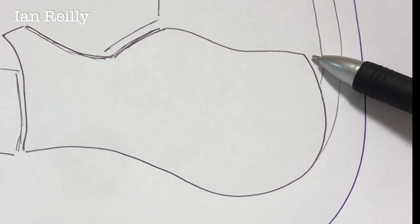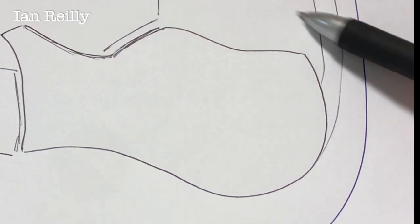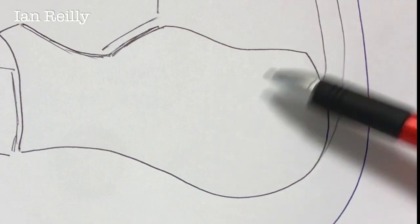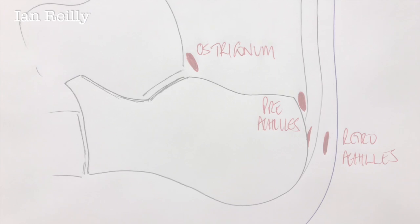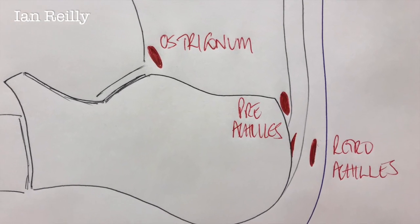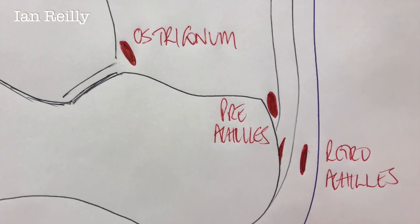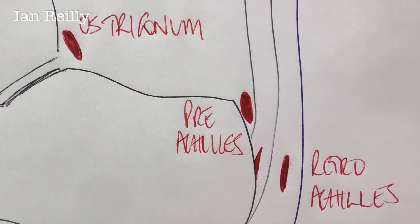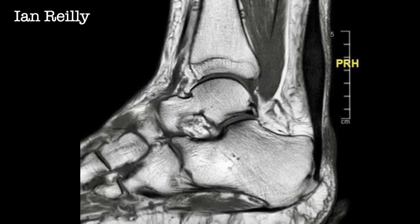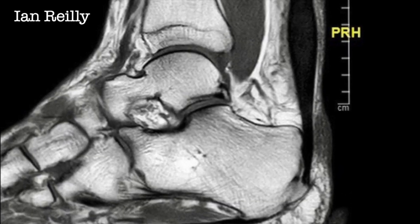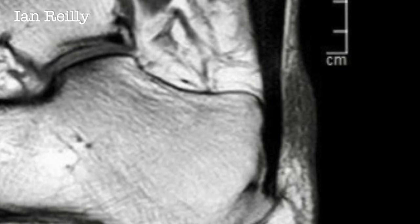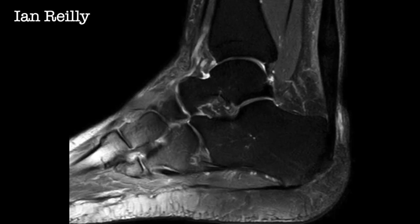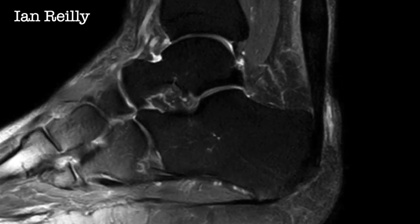So this case is pre-Achilles bursitis, but you saw in the MRI quite a lot of bone bruising as well — really quite an interesting heel. Just to make the point about the retro-Achilles bursa: this is a different patient, and you can see from the T1 and T2 scans that the swelling is behind the Achilles tendon on this patient.